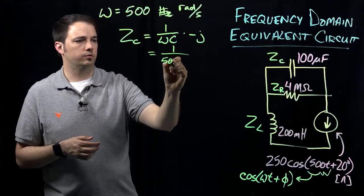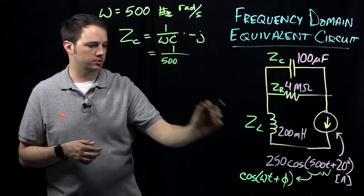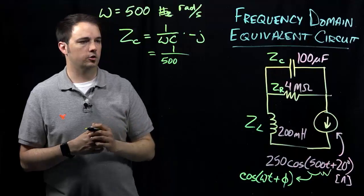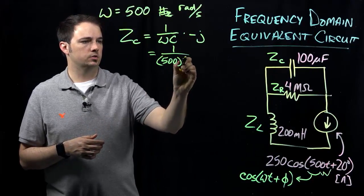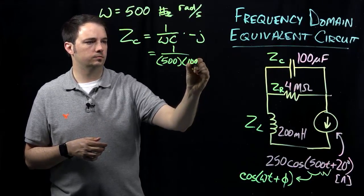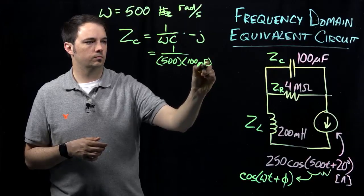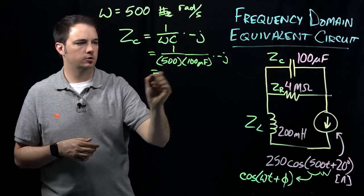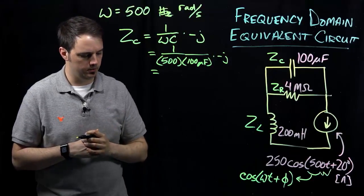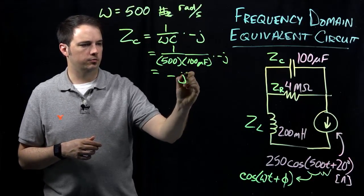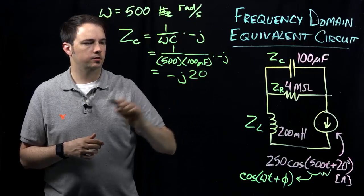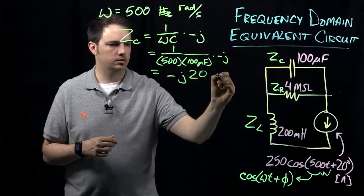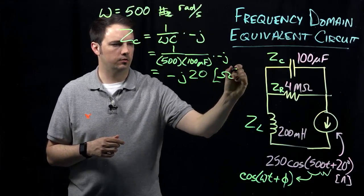So here, we just basically are plugging in our various quantities that we have. So again, here we'd have 1 over 500 is our frequency that was indicated by what we had in our current source times my capacitance, 100 microfarads, times minus J. So just evaluating this expression here, we'd come out with a quantity of minus J20. This is for our impedance. And again, impedance would be in units of ohms.